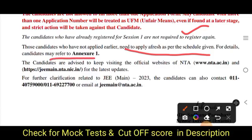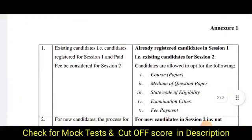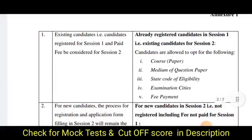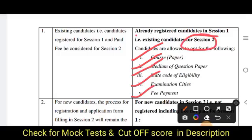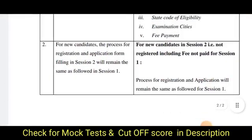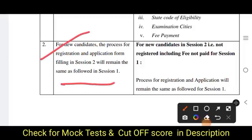Referring to Annex 1, there are two cases. For existing candidates: they need to opt for the course, medium of exam, state code of eligibility, exam cities, and fee payment for Session 2 only — since they already appeared for Session 1. For new or fresh candidates, the process for registration and application form filling in Session 2 will remain the same as it was for Session 1.